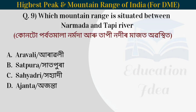Next question: which mountain range is situated between the Narmada and Tapi rivers? Anamudi Parvat Mala is located in the middle of the Narmada and Tapi rivers.